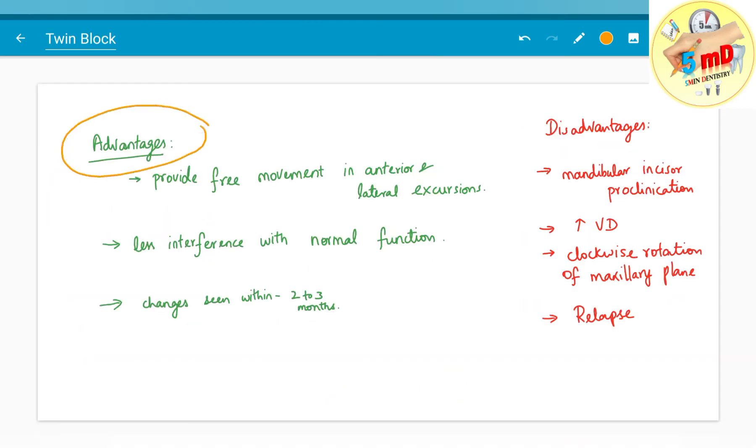Let us move on to the advantages and the disadvantages of twin block appliance. It provides free movement in anterior and lateral excursions due to its method of fabrication and it has less interference with the normal function.